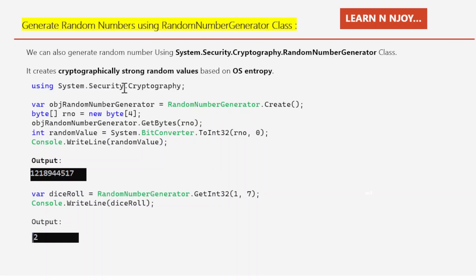In this example, I added the namespace using System.Security.Cryptography. Then I use the Create() method — RandomNumberGenerator.Create() — which gives an instance stored in objRandGenerator. I create a byte array: byte[] rNumber = new byte[4]. Then I call objRandGenerator.GetBytes(rNumber) to populate the byte array with random bytes.